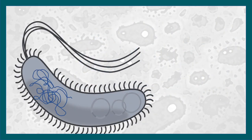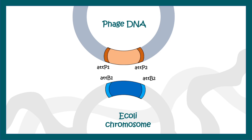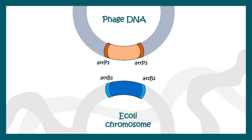In order to understand gateway cloning, we need to understand how a phage virus integrates its DNA inside E. coli. After infection, the phage DNA integrates into the E. coli chromosome with the help of site-directed recombination. Phage DNA has ATT-P sites whereas the E. coli chromosome has ATT-B sites, and they can recombine with each other. That is how phage DNA integrates with the E. coli genome. While excising out, a similar kind of site-specific reaction is used by the phage virus.